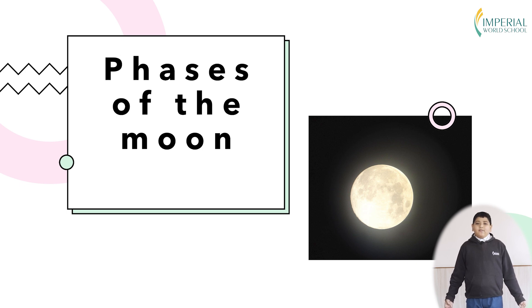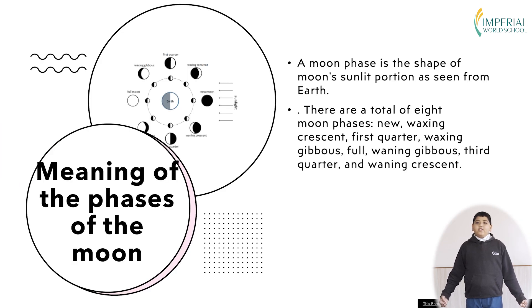What is the phases of the moon? The phases of the moon is the different shapes of the moon that we see from the earth, it is caused by the sun's reflection on the moon.